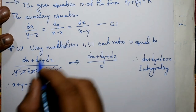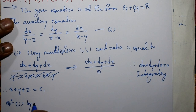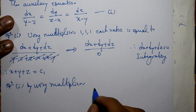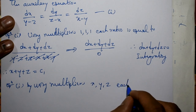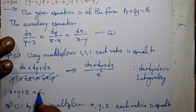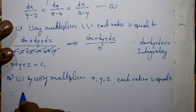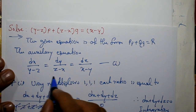One more integral is required. Again consider equation number 1. This time we use different multipliers: x, y, z. Each ratio is equal. Multiply by x, multiply by y, multiply by z, and add. The numerator gives x dx plus y dy plus z dz. We want the denominator part to become 0, so we choose multipliers depending on the denominator.